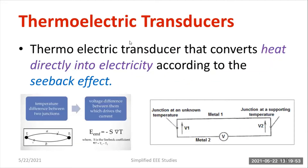Here is one more diagram which depicts the Seebeck effect. There are two temperature junctions T1 and T2, and A and B are both dissimilar metals. Whenever you connect two dissimilar metals in this fashion, one acts as a hot junction and another acts as a cold junction. The EMF is directly proportional to S times delta T, and removing the proportionality constant gives EMF = −S·ΔT.